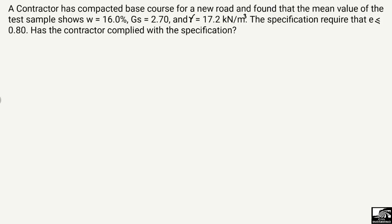The problem states that a contractor has completed a base course for a new road and found that the mean value of the test sample shows a water content of 16%, specific gravity of 2.70, and unit weight of the soil of 17.2 kilonewton per cubic meter. The specification requires that the void ratio, e, should be less than or equal to 0.80.